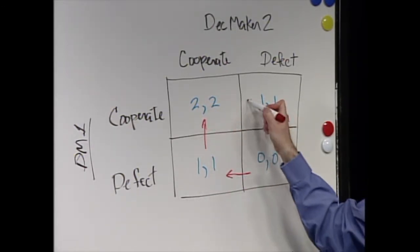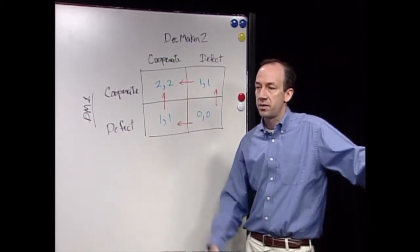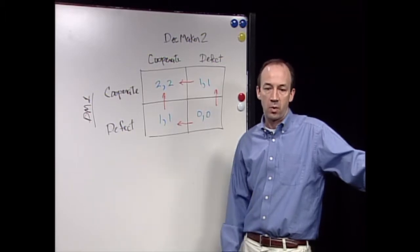And likewise, the reverse happens. The motivation is to cooperate. It doesn't matter what you think the other person's going to do. Your best bet is to cooperate, a Pareto optimal solution.